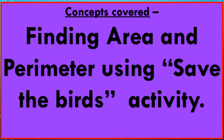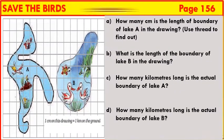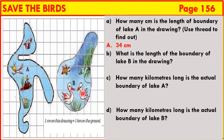Today we are going to find Area and Perimeter using the Save the Birds Activity. There are two beautiful lakes near a village as shown in the figure — Lake A and Lake B. People come for boating and picnics in both the lakes.